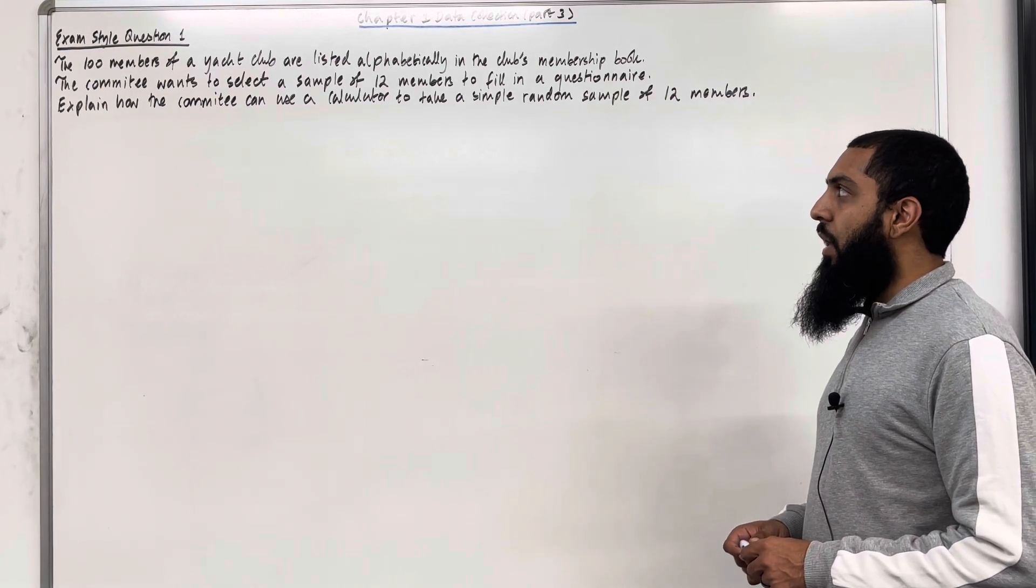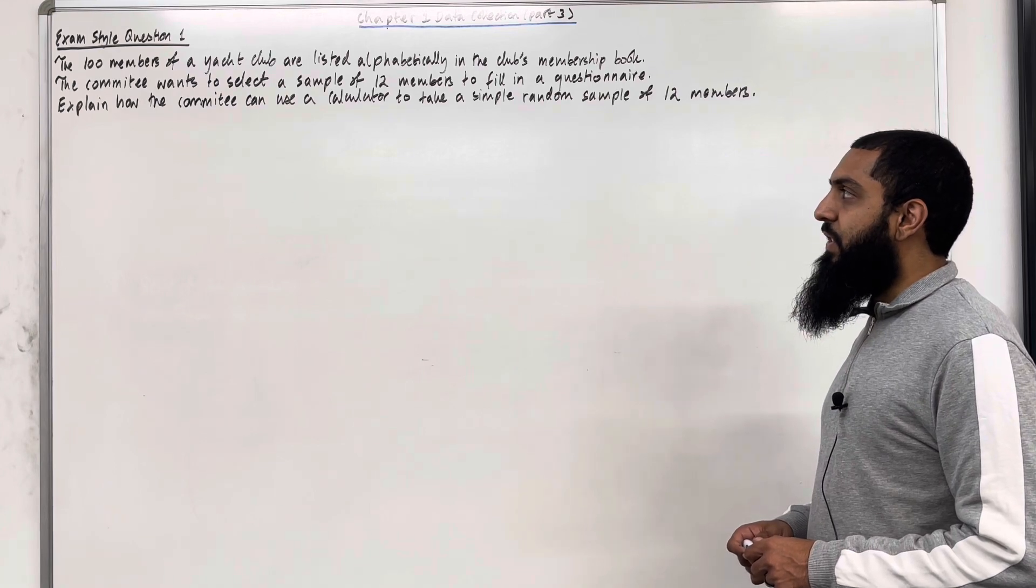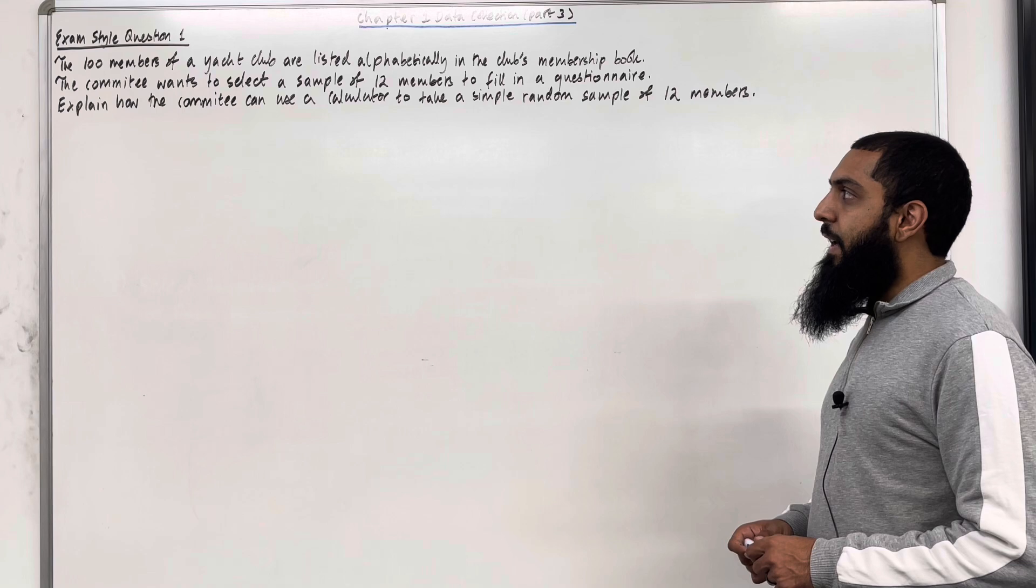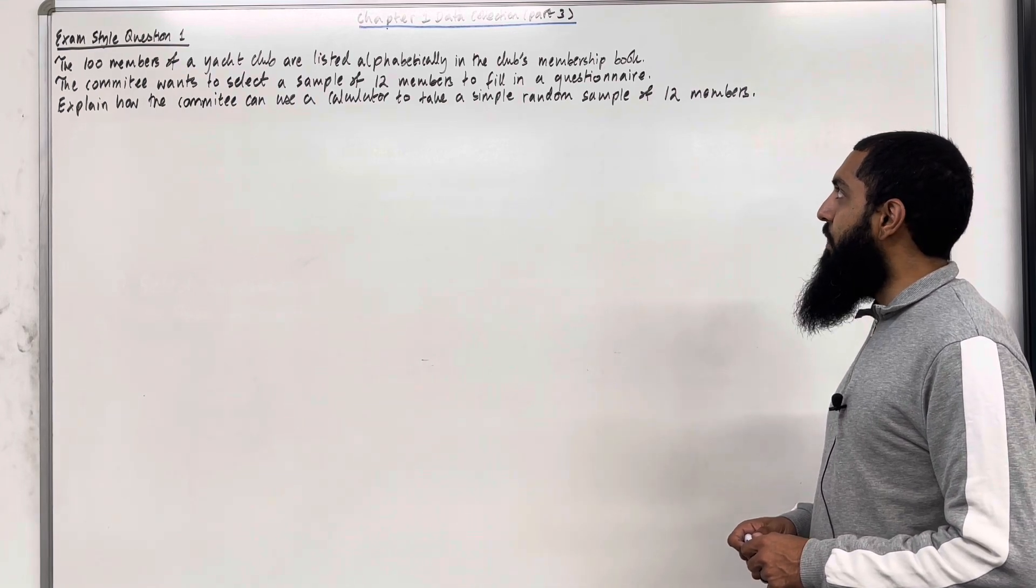The 100 members of a yacht club are listed alphabetically in the club's membership book. The committee wants to select a sample of 12 members to fill in a questionnaire. Explain how the committee can use a calculator to take a simple random sample of 12 members.